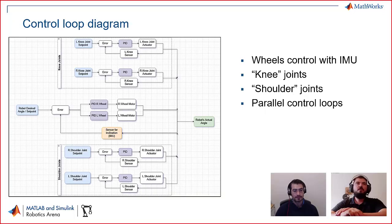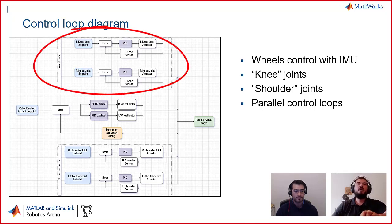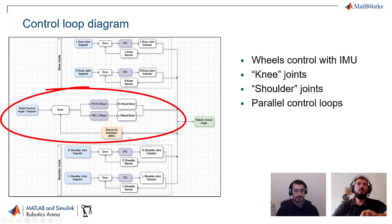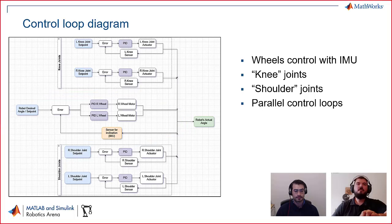Starting off with the control loop diagram, on the left side we have all the closed control loops that are involved. At the top side we have two closed control loops that represent the joints, and then in the middle of the diagram we have the main one that represents the IMU sensor and the wheels.